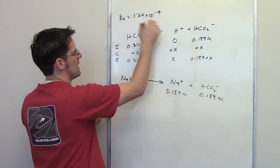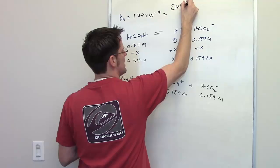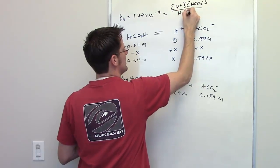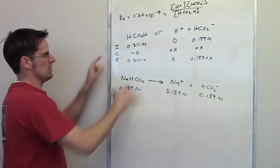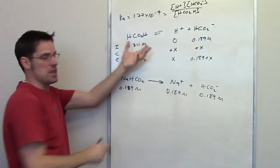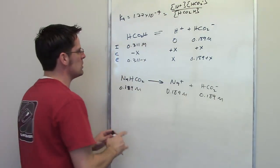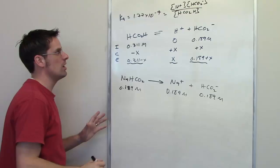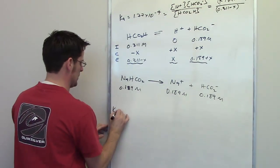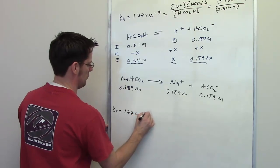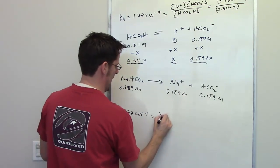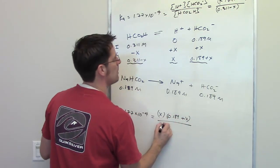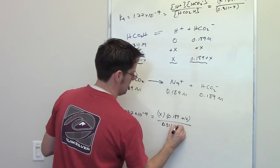Now, Ka, which is given to me up here, is equal to the equilibrium concentration of H+, multiplied by the equilibrium concentration of formate, divided by the equilibrium concentration of formic acid. That is the Ka expression for this equilibrium setting. So, what I have to do is take each of these numbers, or these values, and put them in for their respective terms up here, and then solve for X. So, Ka is going to equal 1.77 times 10 to the negative 4th, which is going to be equal to X, multiplied by 0.189 plus X, divided by 0.311 minus X.